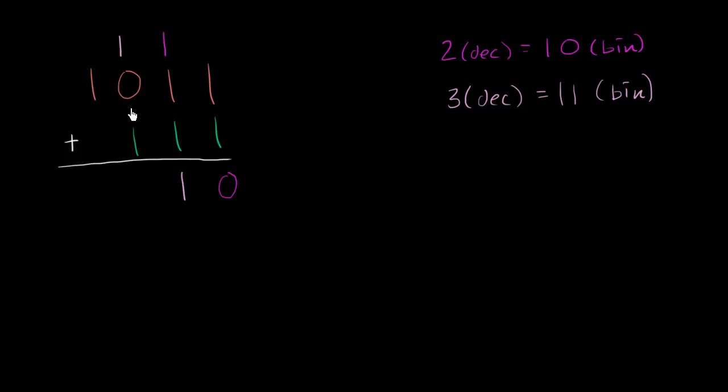And over here, I have a one and a one, which is going to be two, which we already know we represent as one zero. So you write zero here, and then you carry the one. And then once again, one and one is two, which is one zero in binary. And we're done. We've just added these numbers. Now, you might be saying, hey, let me make sure that this actually makes sense.